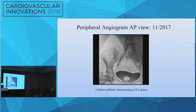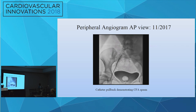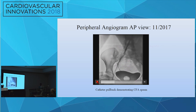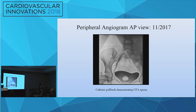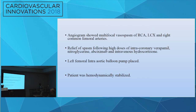That is the peripheral angiogram, and we placed an intra-aortic balloon pump. The catheter pull-back demonstrates circumflex spasm, as you can see in this video. Angiogram findings showed multifocal vasospasm of the RCA, circumflex, and right common femoral arteries, which were relieved with high doses of intracoronary verapamil, nitroglycerin, abciximab, and intravenous hydrocortisone. A left femoral intra-aortic balloon pump was placed and the patient was hemodynamically stabilized.